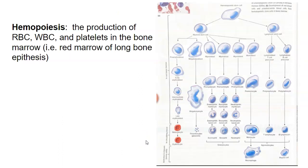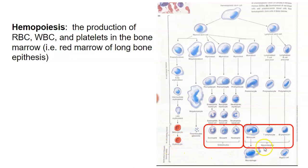Hemopoiesis is the production of red and white blood cells in addition to platelets, and it takes place in the red marrow of long bones — at the epiphyses. In the red marrow, hemopoietic stem cells differentiate and go through a series of immature blood cell stages until we're left with erythrocytes, granulocytes, and agranulocytes. The ones circled in the diagram are the white blood cells we need to know.